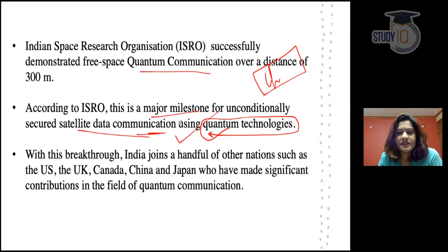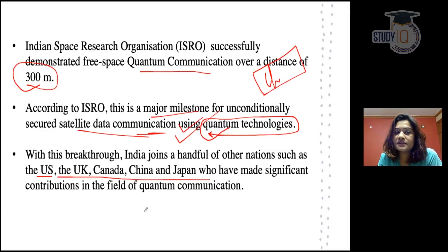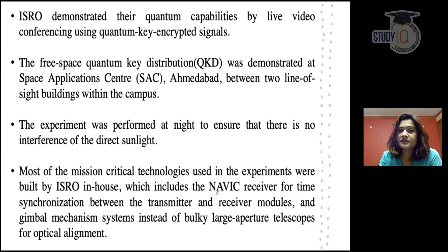If we are successful in 300 meters, it means that it is right, and now we have to extend it. India, USA, UK, Canada, China, and Japan are among those countries that have given significant contributions in quantum communication and success.